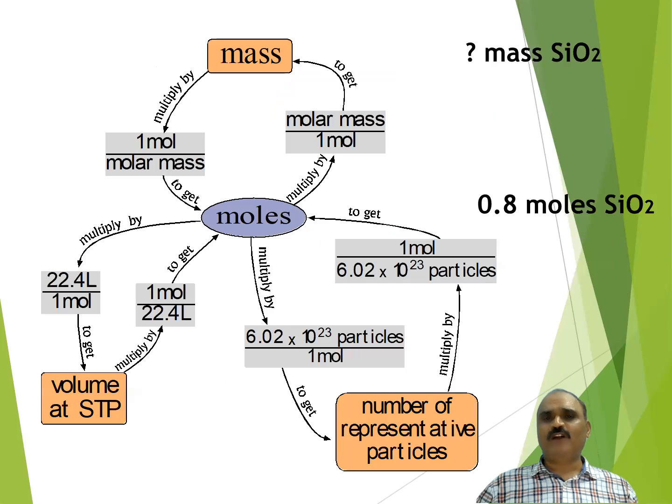And if you want to go back, for example, now we have 0.8 moles of silicon dioxide. And we want to get its mass. A numerical is there that what is the mass of 0.8 moles of silicon dioxide. Silicon dioxide is sand. SiO2 is silicon dioxide. So we have to find mass of 0.8 moles of silicon dioxide. What we shall do?